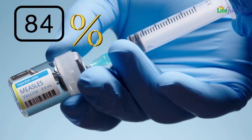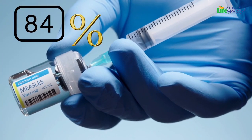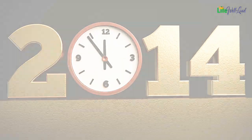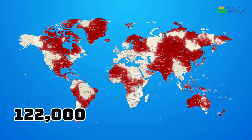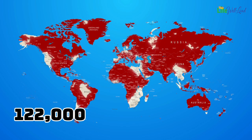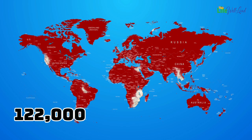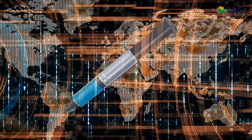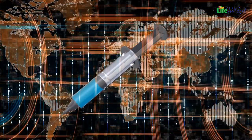Although 84% of people are vaccinated against measles, in 2014, 122,000 individuals succumbed to the infection. Some cannot be vaccinated due to age, medical conditions, or allergies, relying on the rest of us to halt the disease's spread.